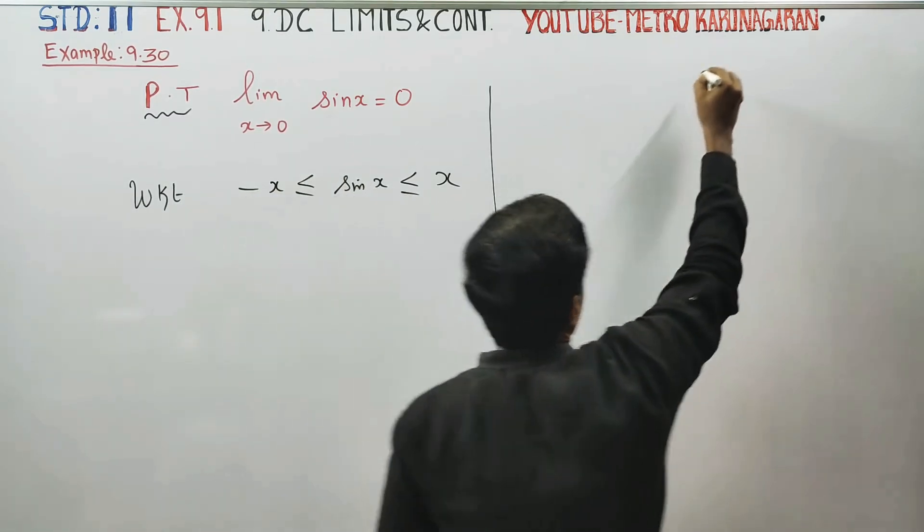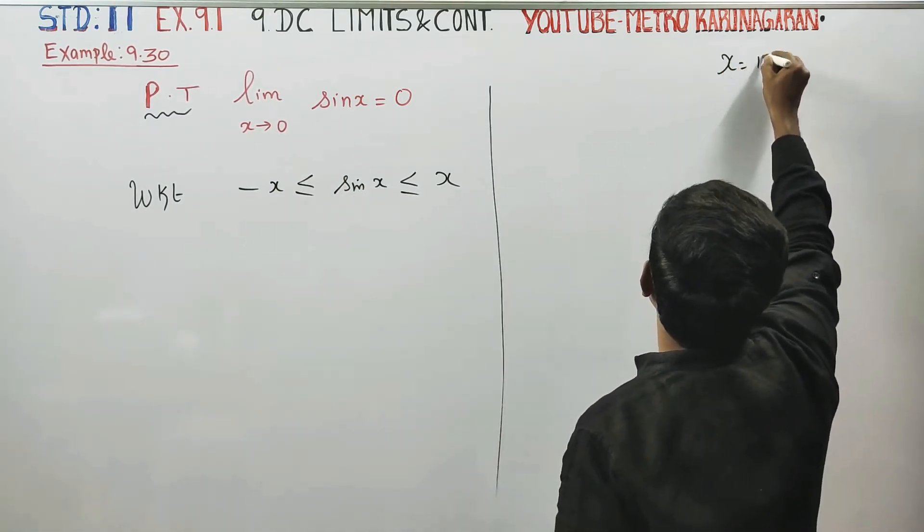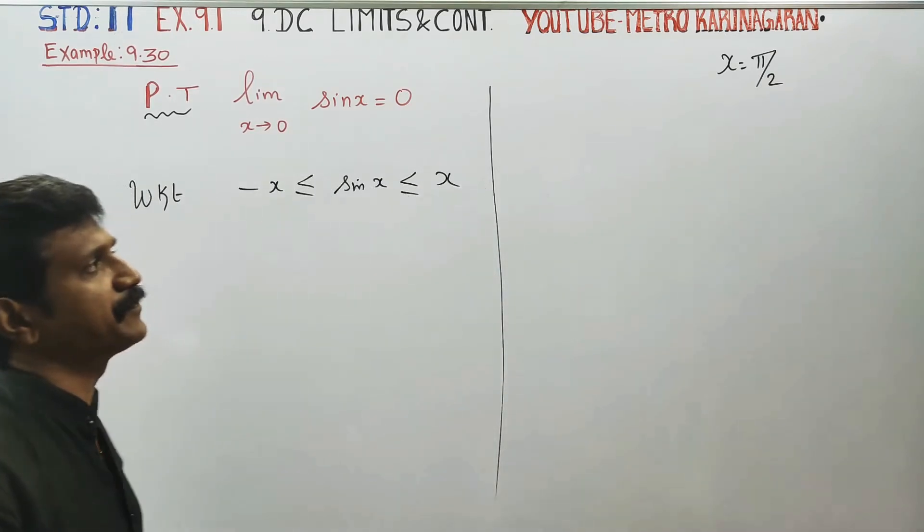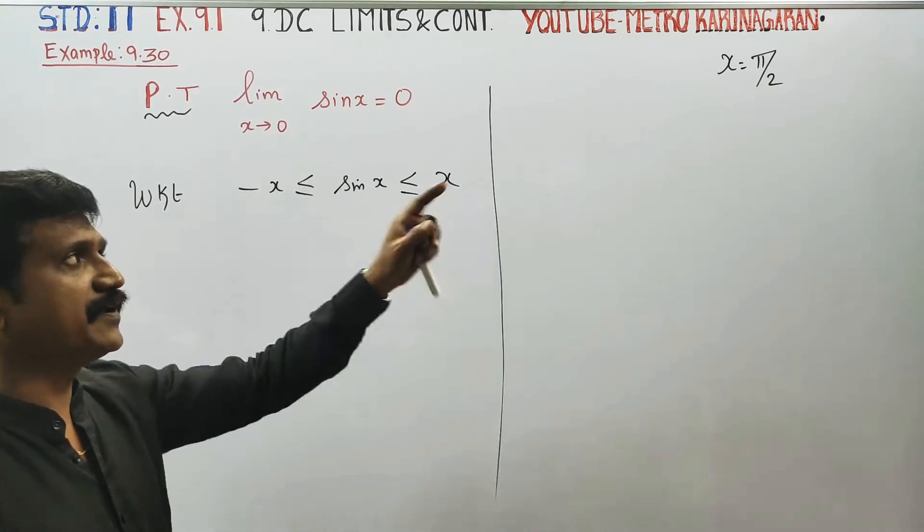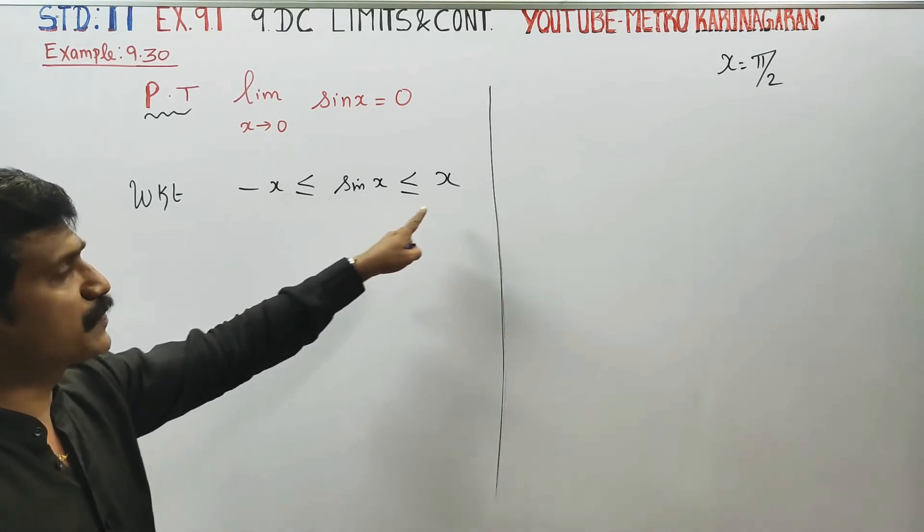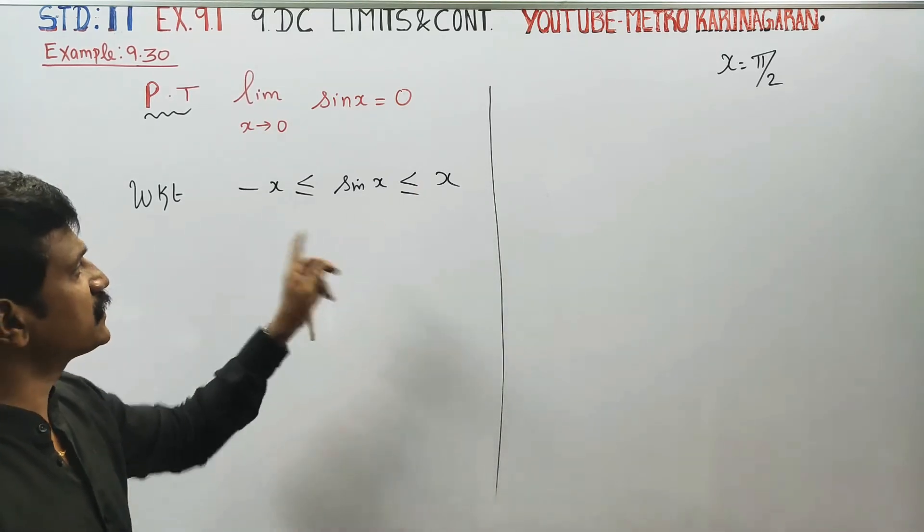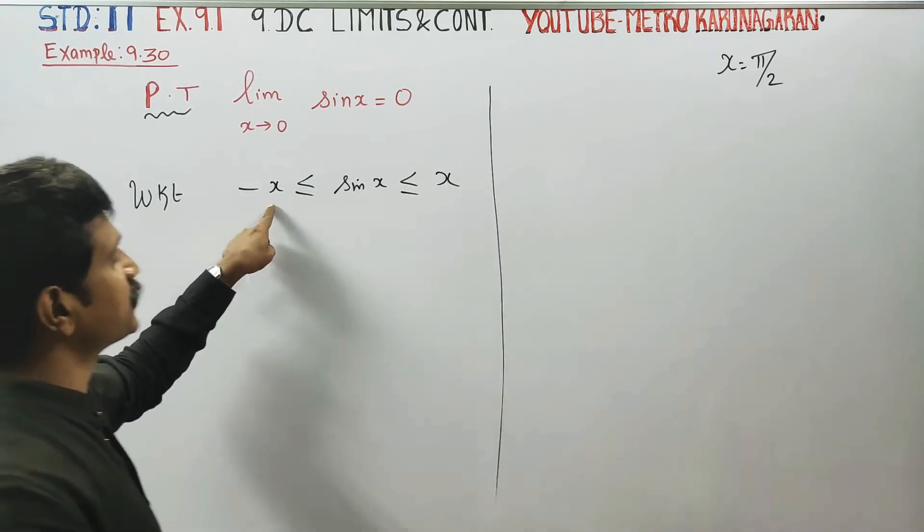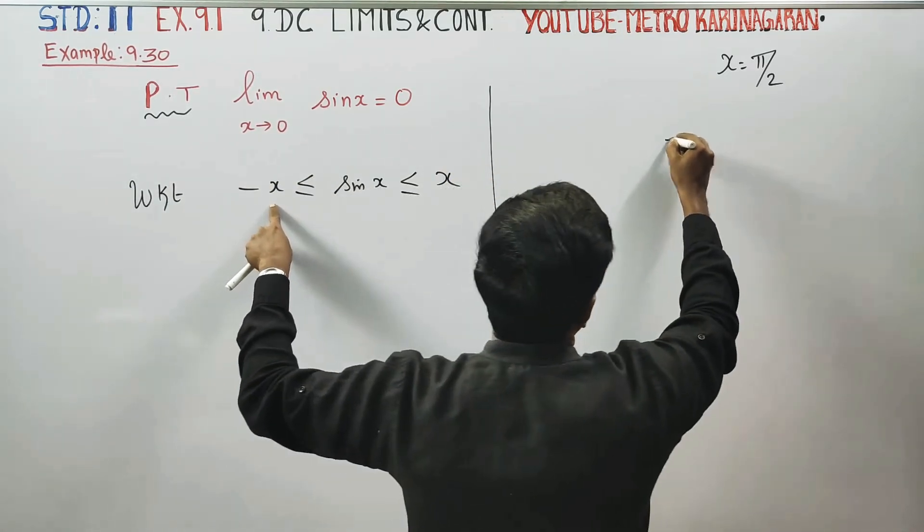For example, let's substitute an angle. Take x equals 90 degrees. In radians, 90 degrees equals π/2. Let's look at this substitution and examine this angle.